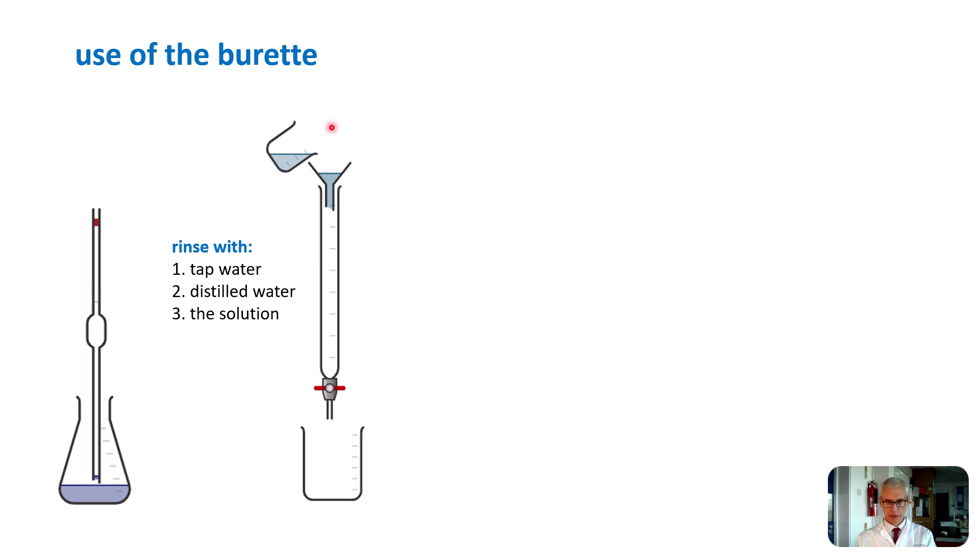We fill the burette from a beaker with the solution of unknown concentration. Of course, we need to make sure that the tap of the burette is closed, which is in the position as indicated. We also note that we have a beaker underneath the burette. We do not place the conical flask under the burette at this point because there may be spillage. You often, when you're inexperienced, overfill the funnel and then you have a solution running down the burette. We don't want that going into the conical flask of our test solution. So, a beaker to catch any overflow.